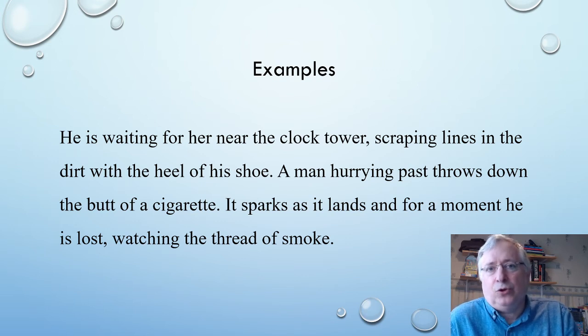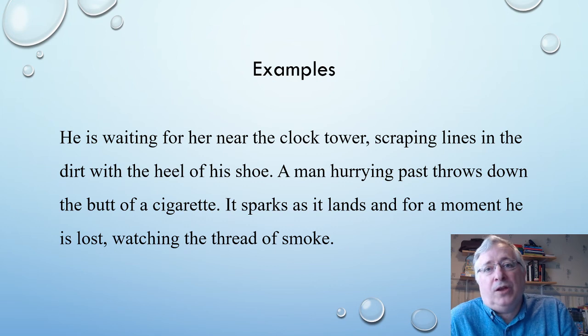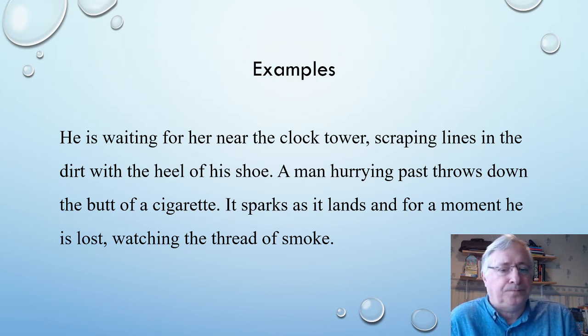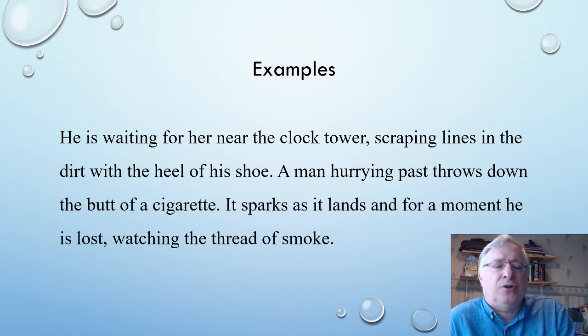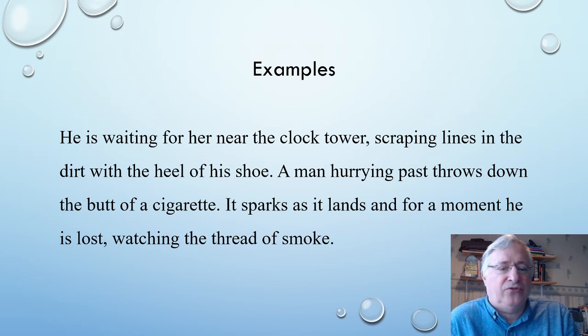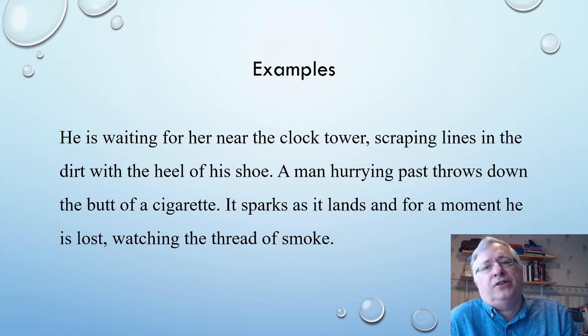Here again we first tell the reader where they are. This is a story set in the high street in Leicester, and we see the clock tower, which is an architectural construction at the end of the high street. Just telling the readers that sets the overall view. Then we have a couple of visual descriptions: scraping lines in the dirt with the heel of his shoe, a generalized visual thing; a man hurrying past, another generalized visual thing. I'm not telling you much about the man—just getting that sense of movement and the crowds on the high street.